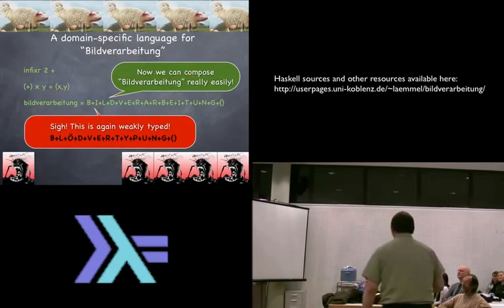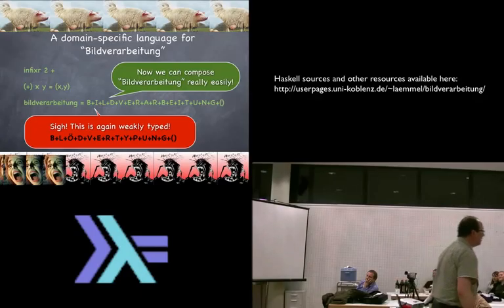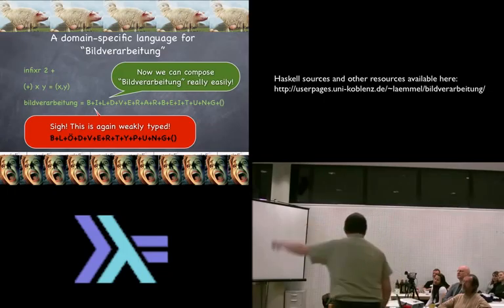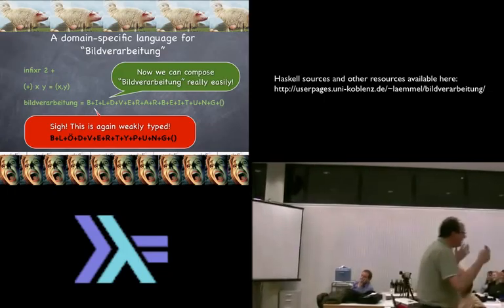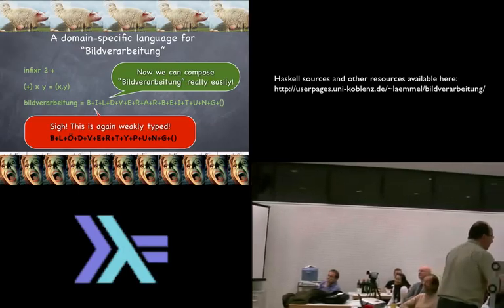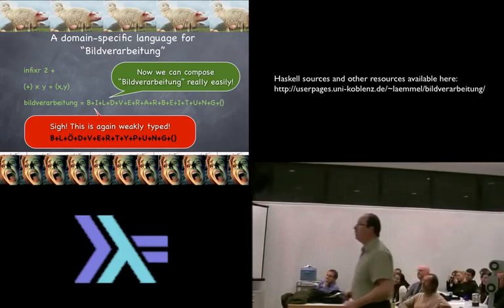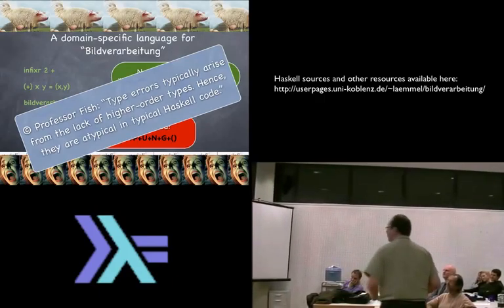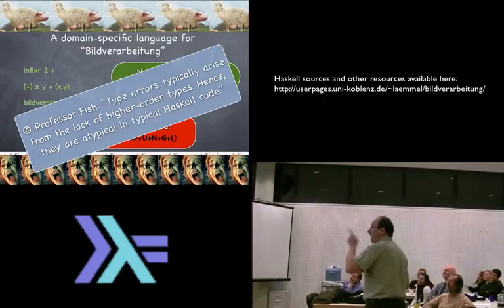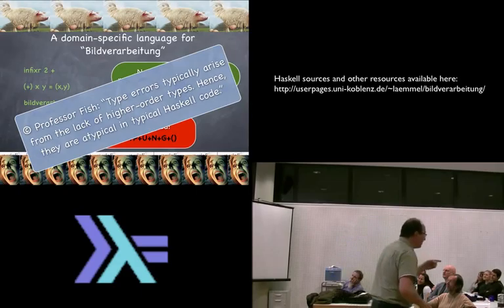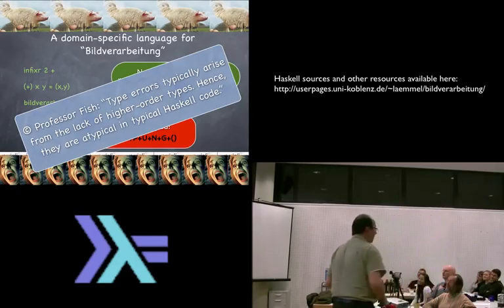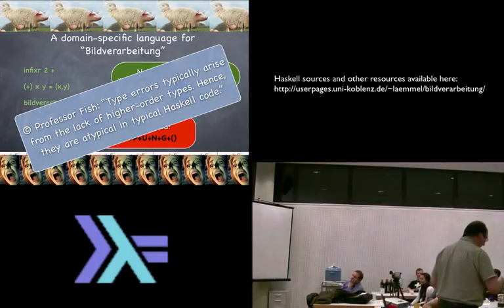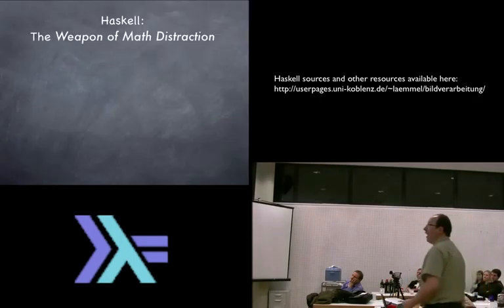Except that this is again not strongly typed. You can do things that are wrong. This is not a domain-specific language. We need to do this differently. Type errors arise from the lack of higher order types. If you don't use higher order types, you get type errors. If you use them, it's so difficult to have type errors, you don't get them. So let's have higher order types.